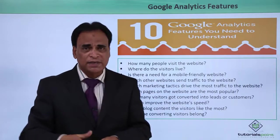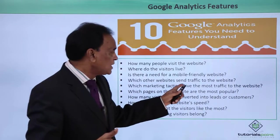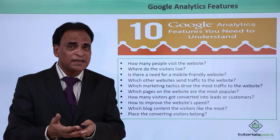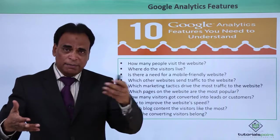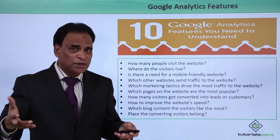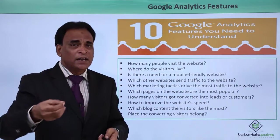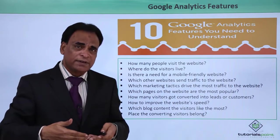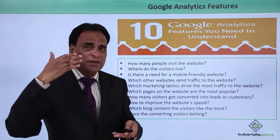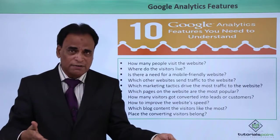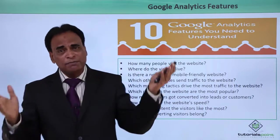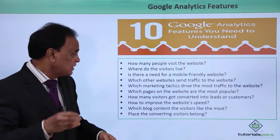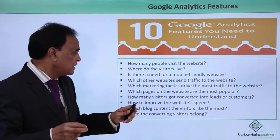Is there a need for a mobile-friendly website? That information is also available. Which other websites send traffic to your website? The traffic may come from Google, from other blogs, or from social media. It can be organic or paid. If you are running a PPC or AdWords campaign, that is inorganic paid traffic. Google Analytics shows how many people are coming organically, how many through paid advertising, and how many from different other websites — and which marketing tactics drive the most traffic to your website.